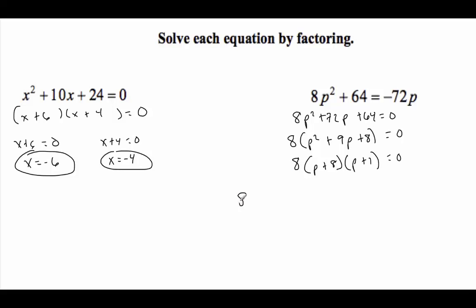Now 8 I can set equal to 0 but really nothing to do there. So this is p plus 8 equals 0 or p plus 1 equals 0. Subtract 8 and we get negative 8, subtract 1 and we get negative 1.